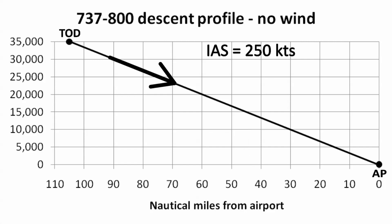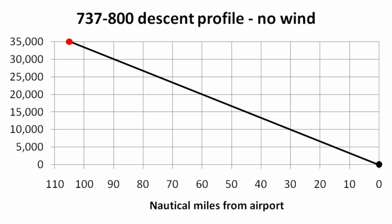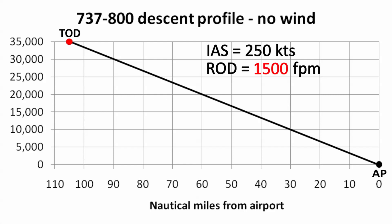A good instrument airspeed for the descent would be 250 knots and the rate of descent will be between 1,500 and 2,000 feet per minute. I'm going to look first at the case where there is no wind aloft. I'll use red dots to show the progress of the flight if the selected rate of descent is 1,500 feet per minute. The red dots are spaced one minute apart. The airplane will pass through 30,000 feet about four and a half minutes into the descent. After 10 minutes the plane will be down to 20,000 feet, and a little bit below the geometric track.